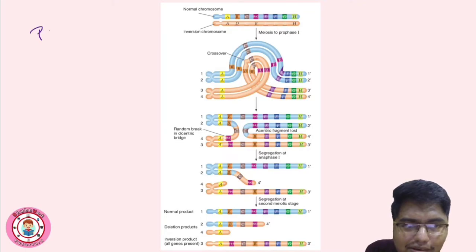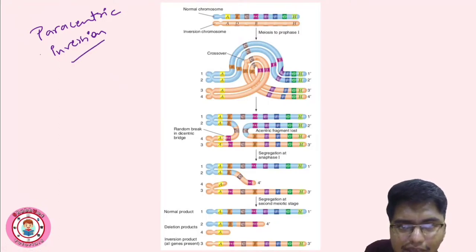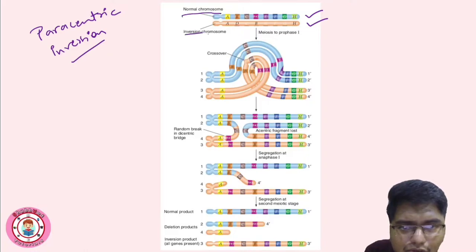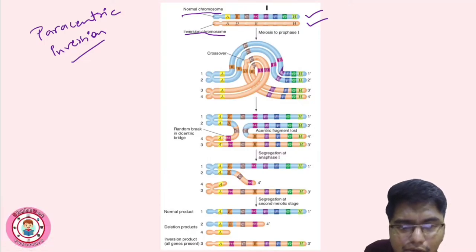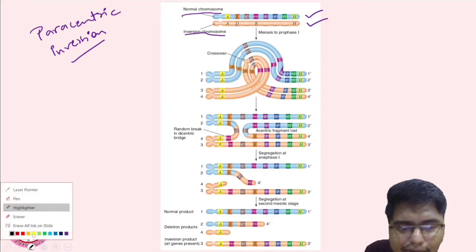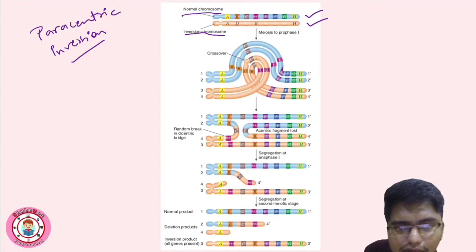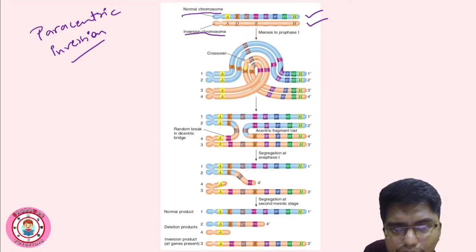This is about paracentric inversion in a heterozygous case. The first chromosome is normal and the second is the inverted chromosome. There are no changes in mitosis; the changes occur in meiosis during the formation of gametes. Mitosis is normal; differences are seen during gamete formation.